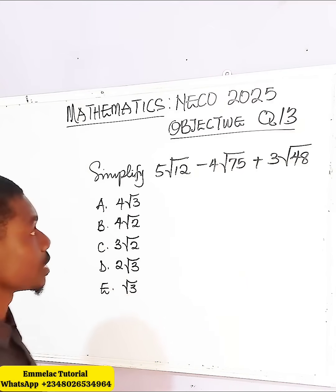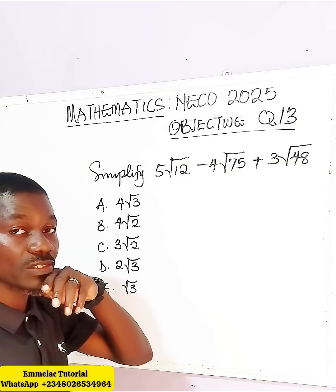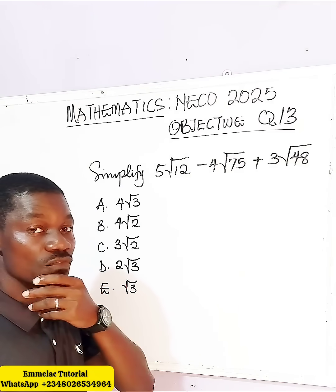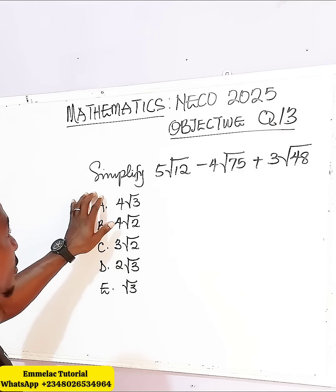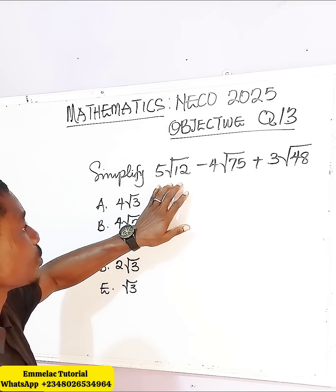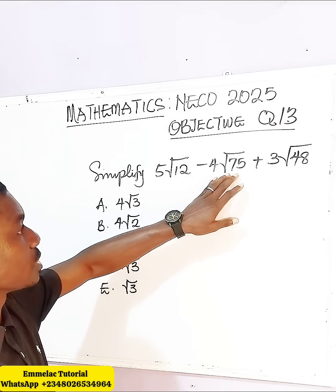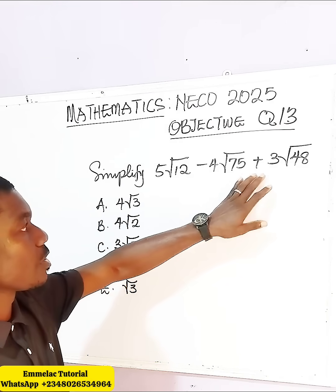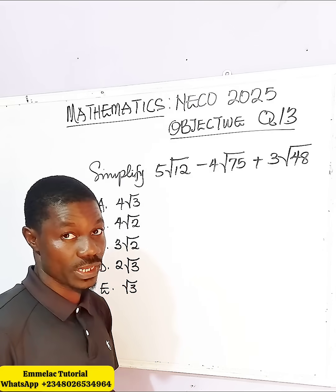Welcome to Millen Connolly Tutorial. Now let us look at question number 13 of the NECO 2025 objective question, and it reads: simplify 5√12 minus 4√75 plus 3√48.